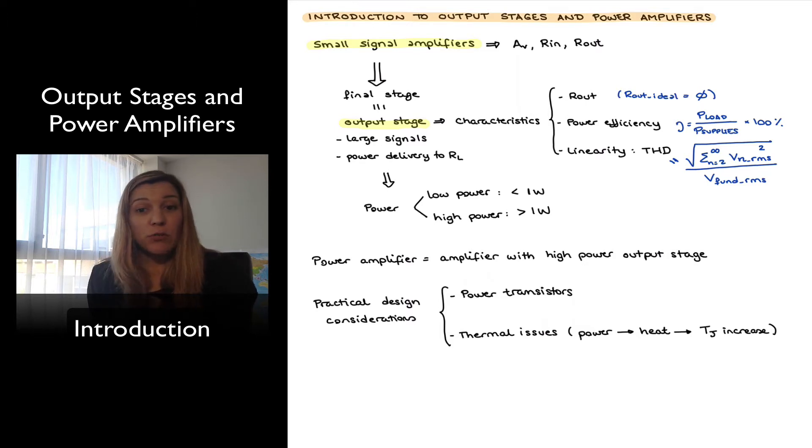Power efficiency is another important characteristic or performance parameter of output stages and it measures how much of the power provided by the supplies is delivered to the load versus how much is dissipated in the output stage and so it's typically expressed as the ratio of the power delivered to the load by the power delivered by the supplies and typically as a percentage so times 100%.